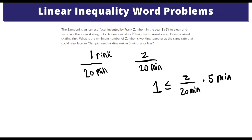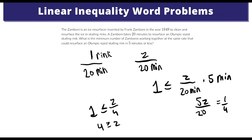We can simplify 5 over 20 to one over four. So we get Z over 4 is greater than or equal to 1. Remember, when we multiply both sides by 4 to solve, we get Z is greater than or equal to 4. So 4 is our answer — you need at least 4 Zambonis.